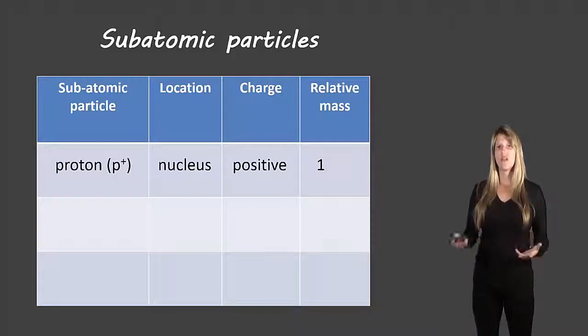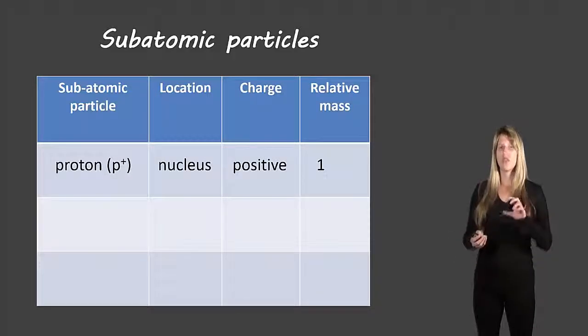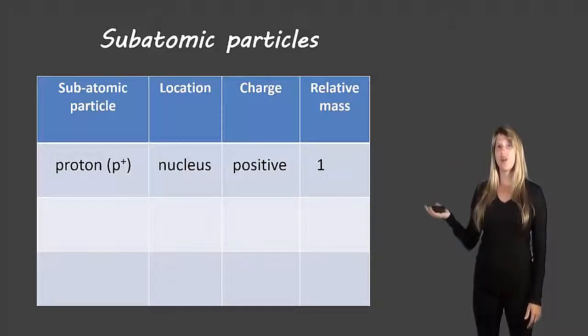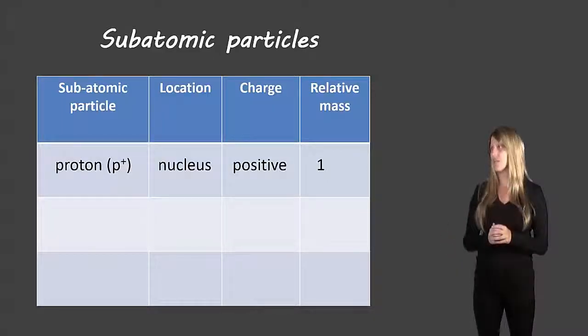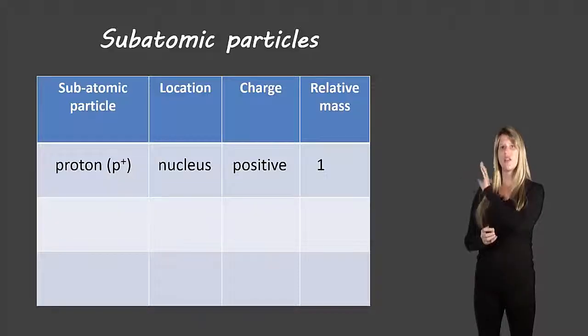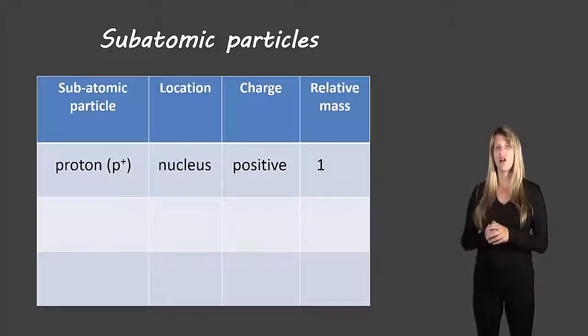The first one is the proton and we give this a symbol p, lowercase p with a superscript plus sign. Now the reason we choose p is for proton and we chose the plus sign because the charge is positive. So a proton has a positive charge and it is located in the nucleus, which is in the center of the atom. Now we'll worry about the last column until we've got all three of our subatomic particles.